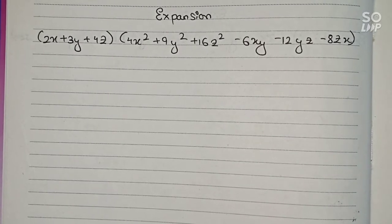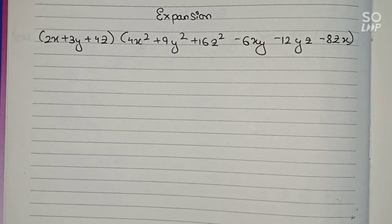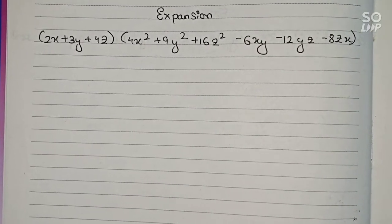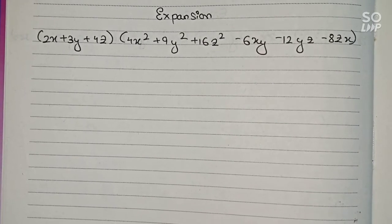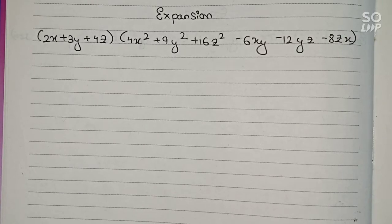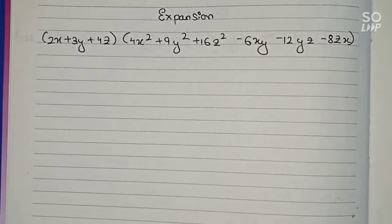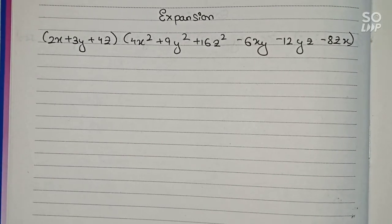Hello guys, welcome to this video. In this video, our question is: expand (2x + 3y + 4z) multiplied by (4x² + 9y² + 16z² - 6xy - 12yz - 8zx).